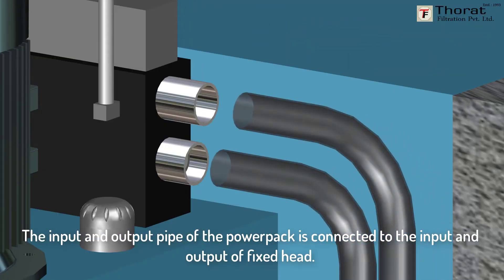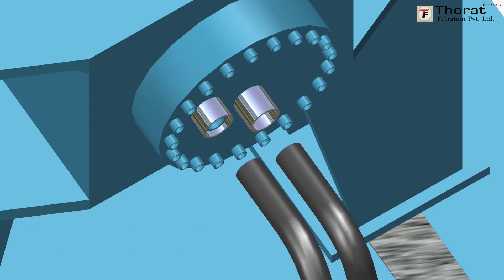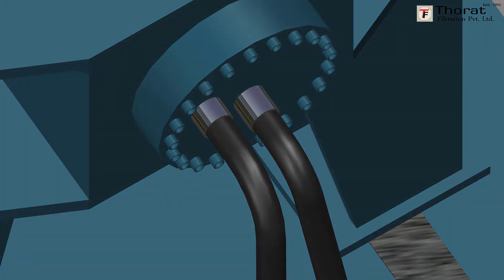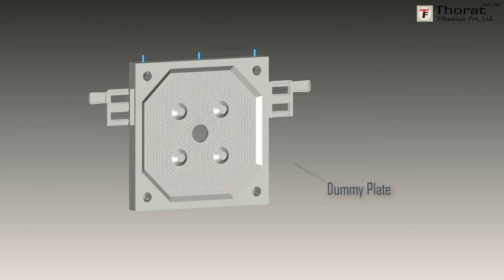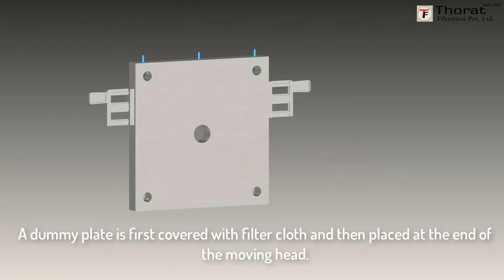The input and output pipe of the power pack is connected to the input and output of fixed head. A dummy plate is first covered with filter cloth and then placed at the end of the moving head.